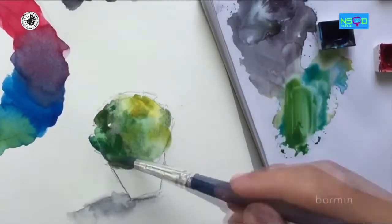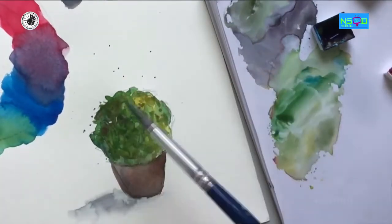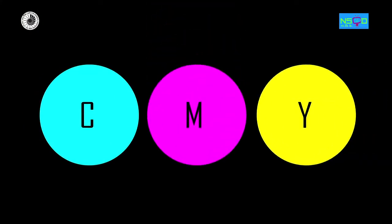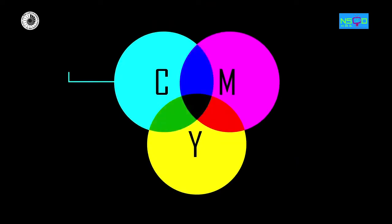The combinations of two of the three primary colours of light produce the secondary colours of light. The secondary colours of light are cyan, magenta and yellow. The secondary colours of light are the primary colours of pigments or dyes.